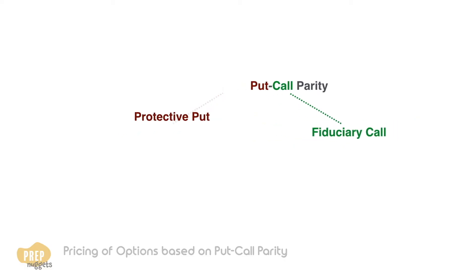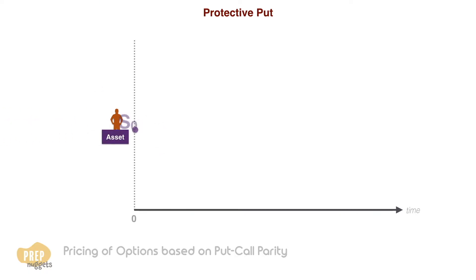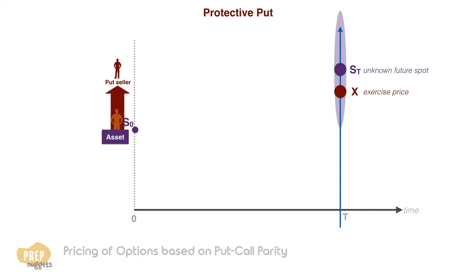We will start with a protective put. Suppose an investor owns an asset that has a current price of S0. We shall assume the asset makes no cash payments and has no carrying costs. The end of the holding period is time t, at which point the asset will be worth St. Fearing the possibility that St will decline, the investor buys a put option with an exercise price of x. This put option has a premium of P0. Combined with the value of the asset, the investor's initial position is worth S0 plus P0, which is the investor's money at risk.